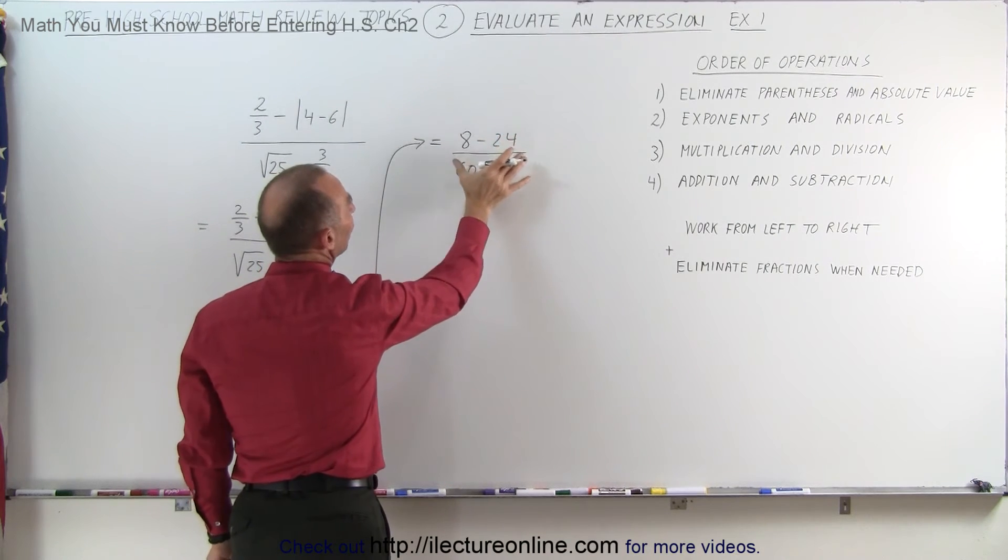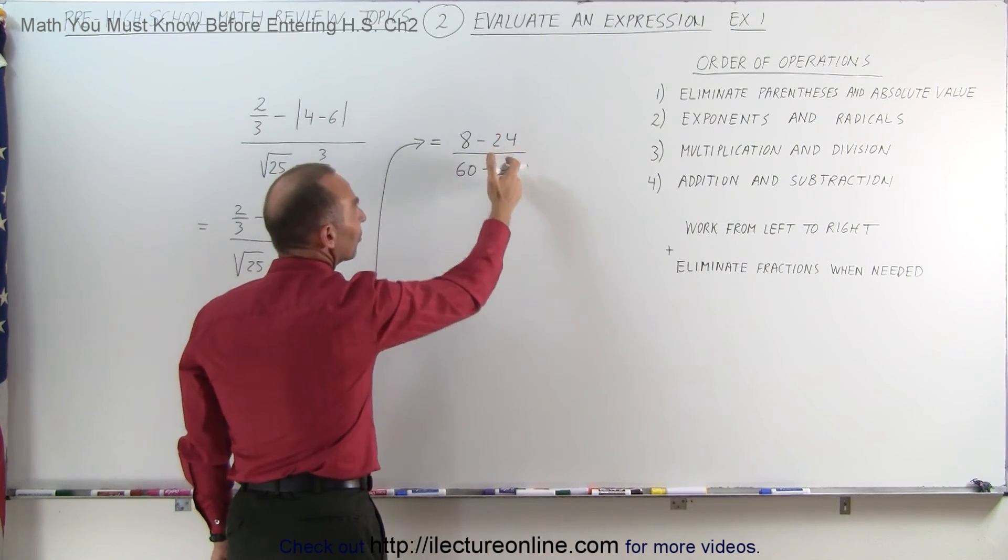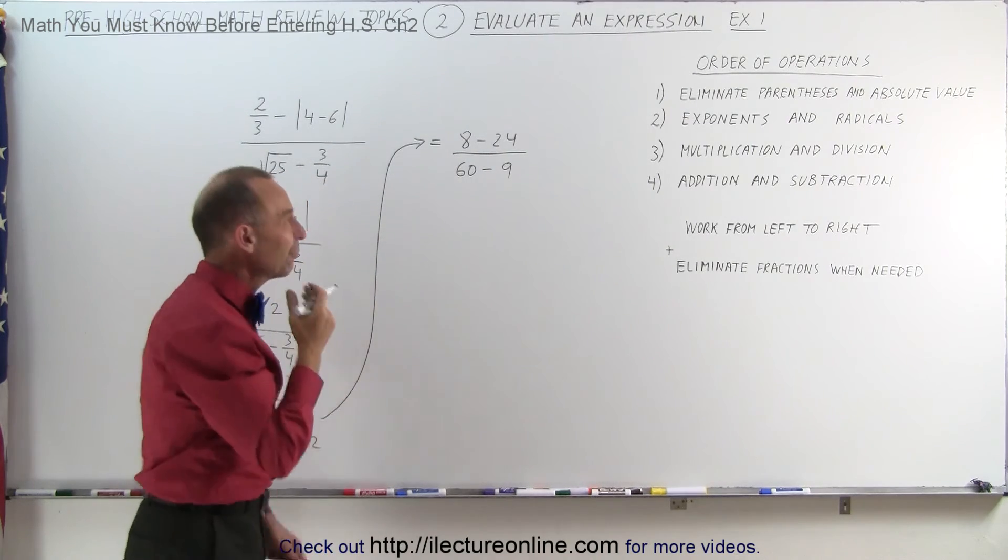Notice now we have 8 minus 24 divided by 60 minus 9. This is a division, but before we can do that we need to combine what's in the numerator and combine what's in the denominator.